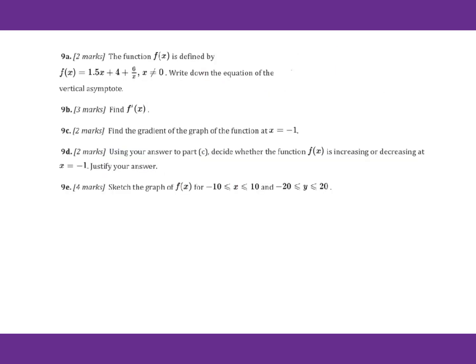Let's go to 9a. The function f of x is defined by this. Write down the equation of the vertical asymptote line. We need to find where the denominator equals zero. Find the derivative of f of x.